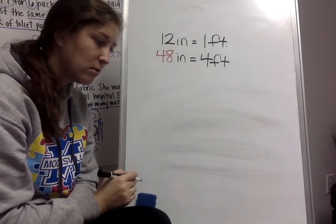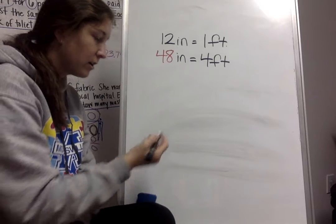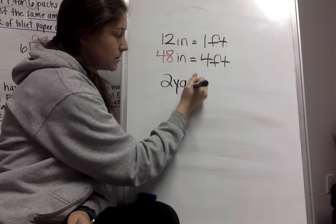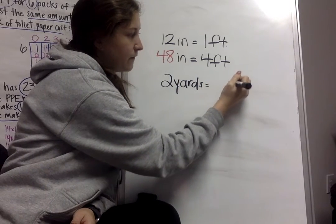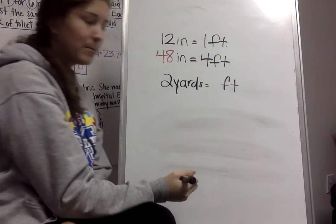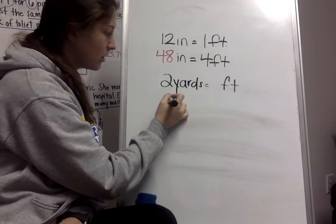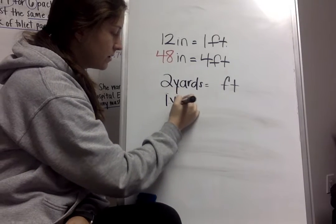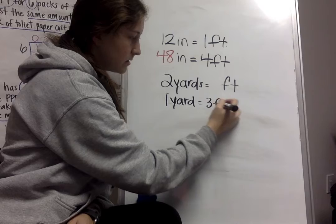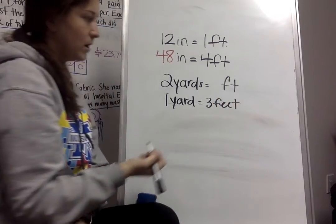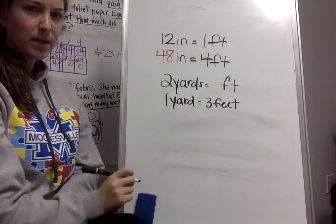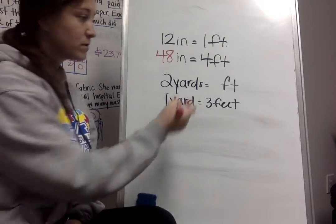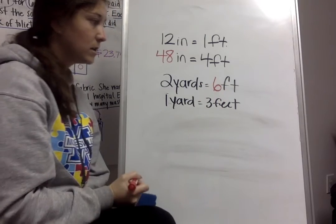If I know that there are two yards, how many feet would that be? So I know that in one yard, there's three feet. So if there's three feet in one yard, how many feet are there going to be in two yards? Well, I'd have to do two times three, so that would give me six feet.